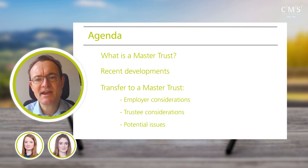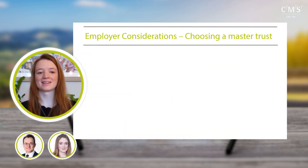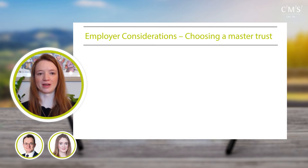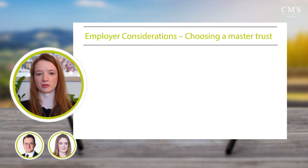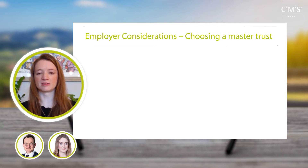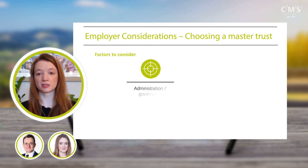Harriet is going to start with the employer perspective. There are quite a few things to think about, focusing on three: choosing a master trust, participation documentation, and member communications. Choosing a master trust will be an individual decision for different employers. One factor is administration and governance — because of the TPR authorisation regime, all master trusts must meet a minimum standard, which is a continuing obligation.